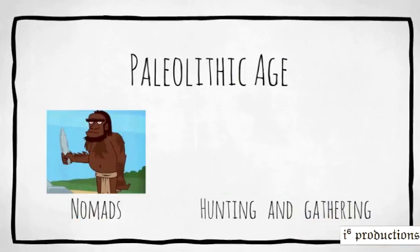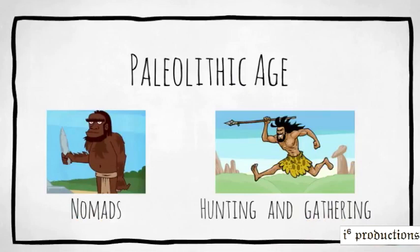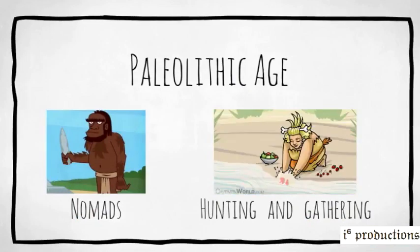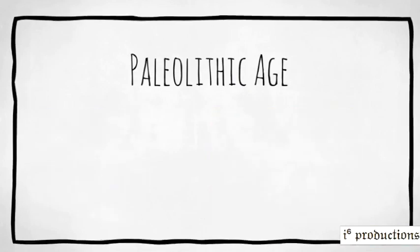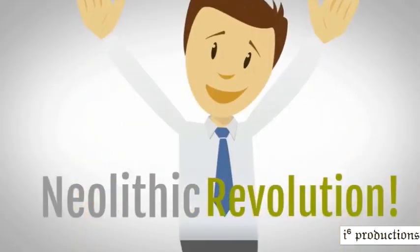People lived in groups of 20 to 30 and spent most of their time hunting and gathering, and work was divided in this age. Men hunted for food while the women gathered fruits and berries, and this was how human beings lived for a few thousand years until the Neolithic revolution happened.